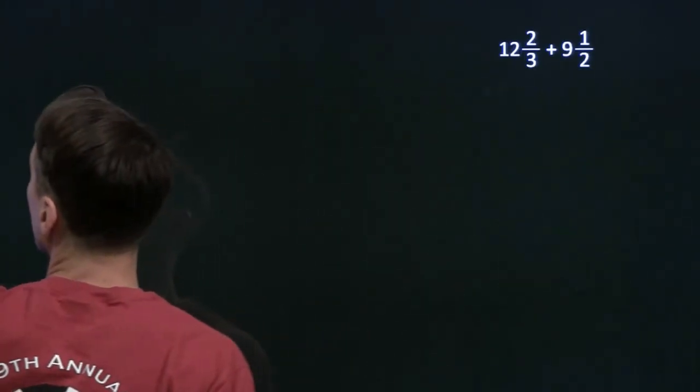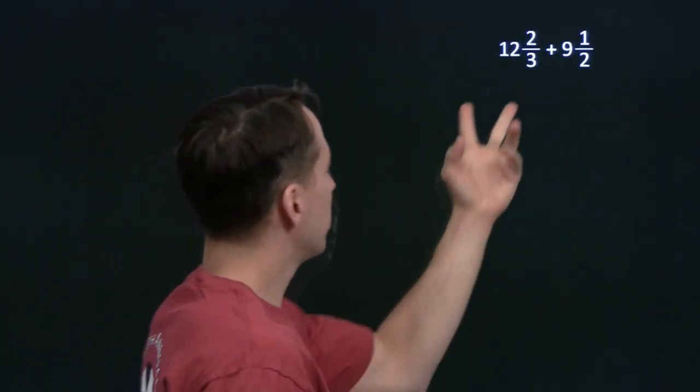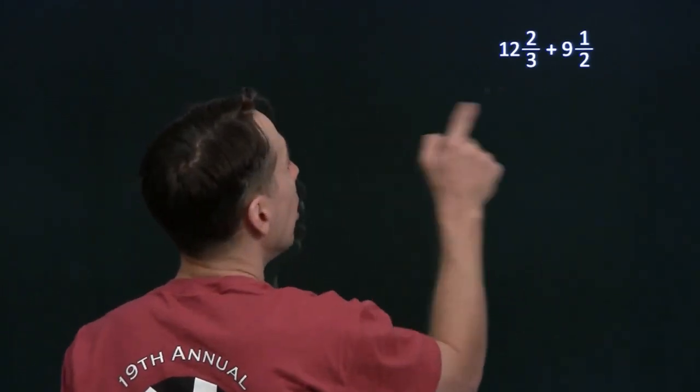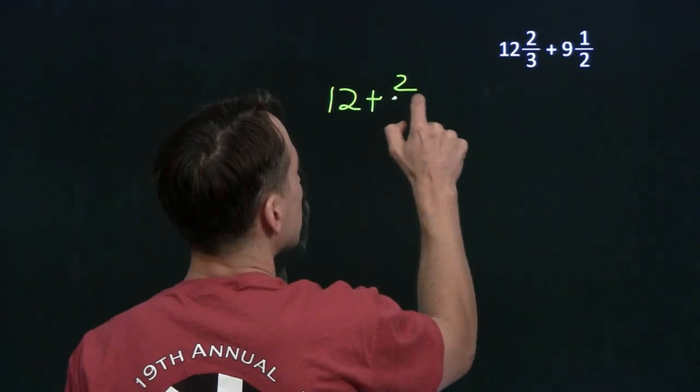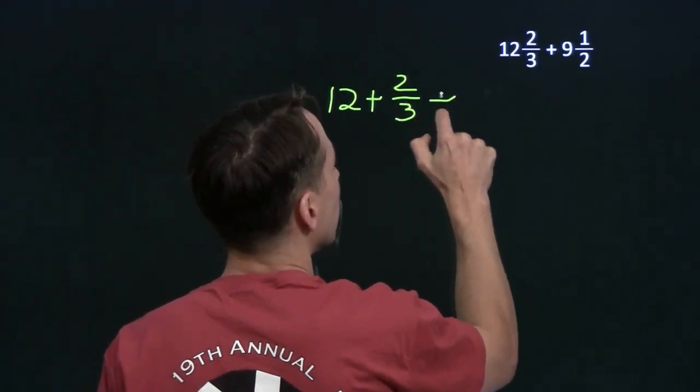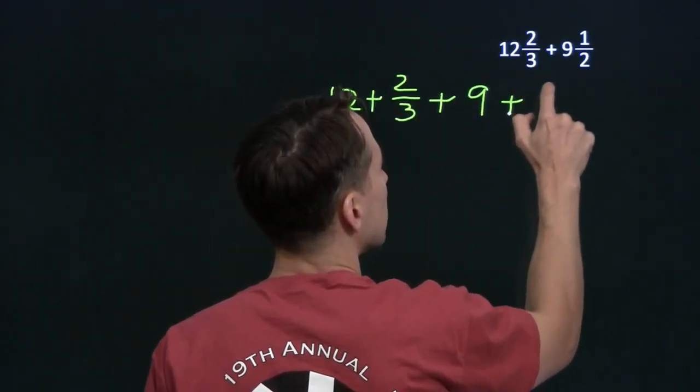All right, let's try one more. Now that we know how to handle this, 12 and 2 thirds plus 9 and a half. We know what we want to do here is break up each mixed number into its integer part and its fractional part.